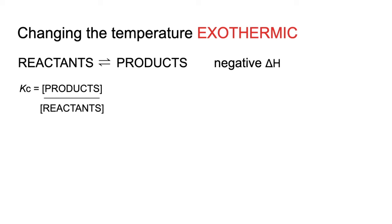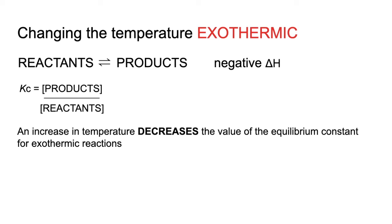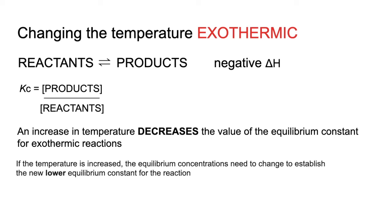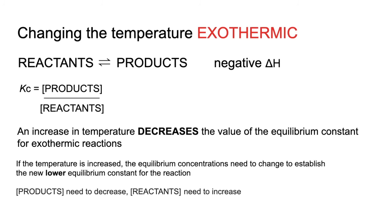For an exothermic forward reaction (negative ΔH), if you increase the temperature, the value of the equilibrium constant decreases. The equilibrium concentrations must then adjust to reach this new, lower Kc value. To lower Kc, the product concentration needs to drop and the reactant concentration needs to increase — so the equilibrium shifts to the left.